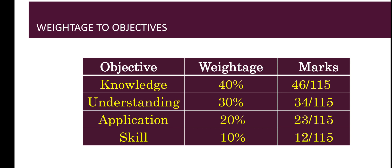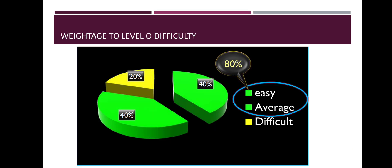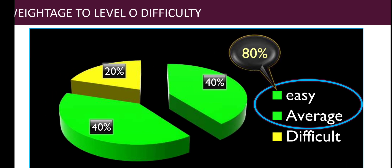Knowledge-based and understanding questions are very easy. If you look at the pattern of the paper, 40% will be easy, 40% will be average, and 20% will be a bit difficult. Out of 115 marks, approximately 80 marks will be easy, and you have to score 70 out of that 80.